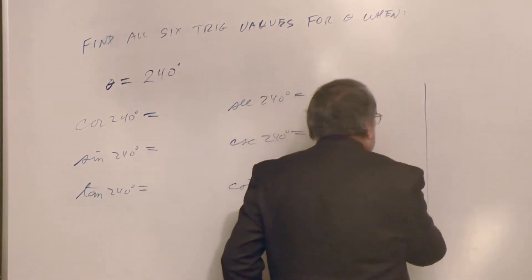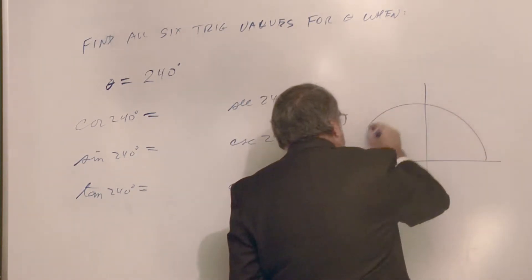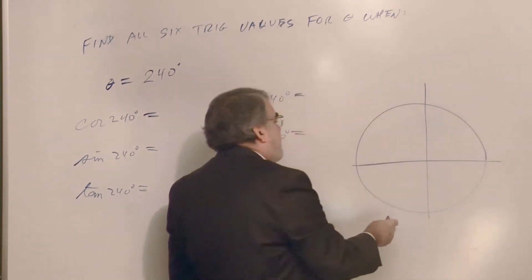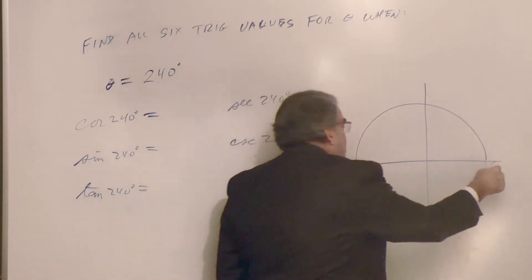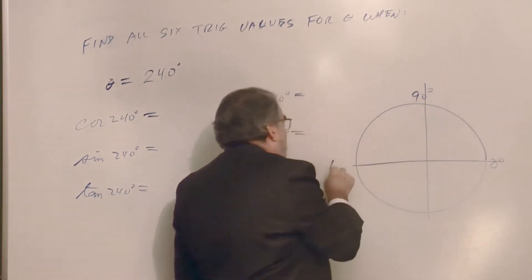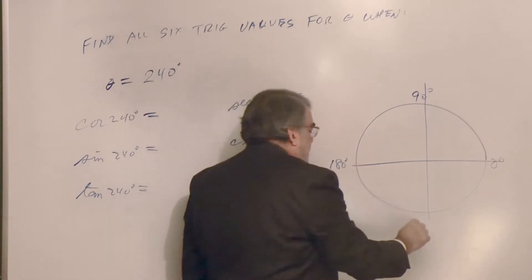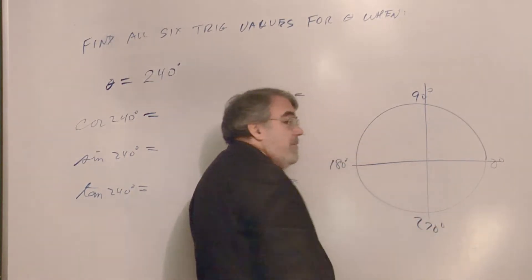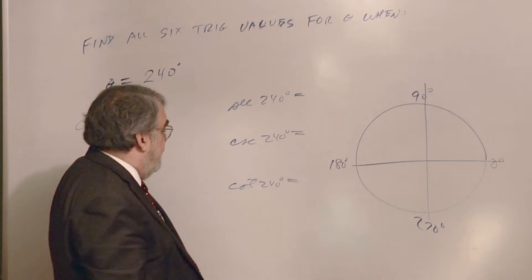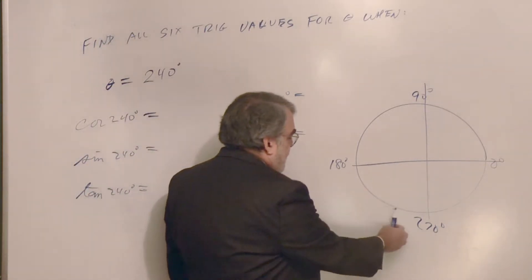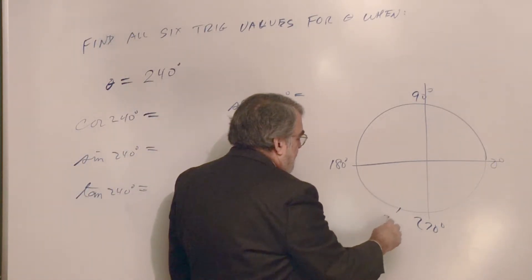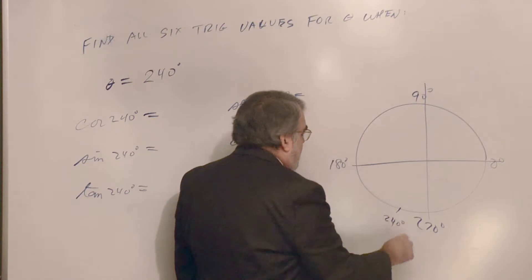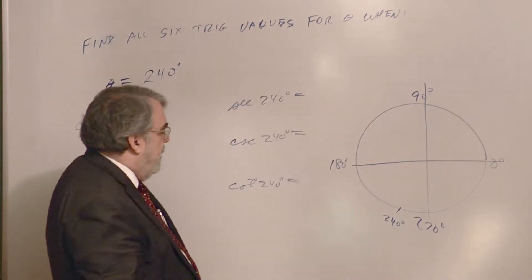Well, where is 240 degrees? And it is, this is zero degrees, 90, 180, 270. Those are the degrees. And where's 240? Well, it's 60 more than 180. It's down here somewhere, right? There's 240 degrees.